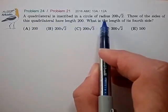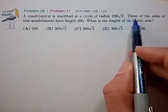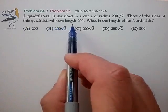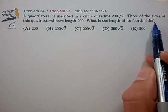The quadrilateral is inscribed in a circle of radius 200 root 2. Three of the sides of this quadrilateral have length 200. What is the length of its fourth side?